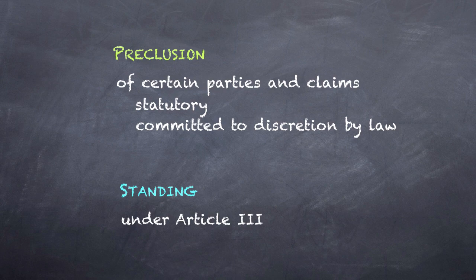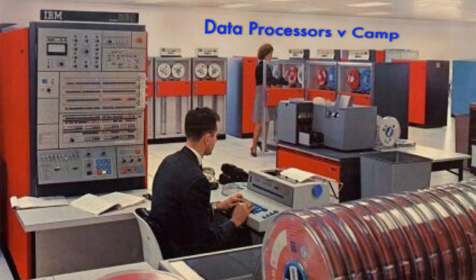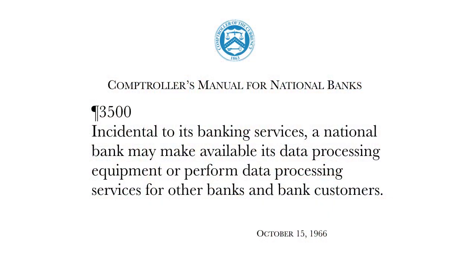To look at some cases: the agency action at issue in Data Processors v. Camp was one taken by the Comptroller of the Currency. To understand the issue, you have to remember that this case arose when computers were very big, very temperamental, and very, very expensive. What you see here is a computer that was probably inferior in every way to a smartphone and certainly less powerful than a laptop. Big companies like banks could afford them, but smaller businesses could not and had to rent time from companies that did own computers. The Comptroller announced a decision to allow banks to compete with non-bank data processors: incidental to its banking services, a national bank may make available its data processing equipment or perform data processing services for other banks and bank customers.